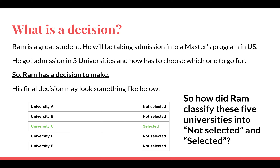Let's look at one such decision-making scenario. Ram is a great student who wants to take admission into a master's program in the US. He got admission into five universities and now has to choose which one to go for. He goes ahead and starts collecting data about all five universities and based on some criteria does analysis, arriving at a decision — University C is selected and the other four are not selected. Basically, he has classified all five universities into two categories: selected and not selected.